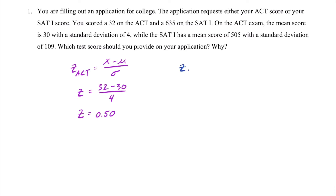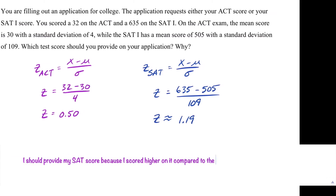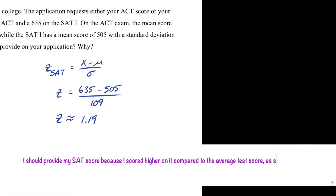Now, the z-score for the SAT uses the same formula: x minus mu, all over sigma. We scored a 635 on the SAT, the mean value of the SAT was 505, and the standard deviation of the SAT was 109, which means we end up with a z-score of approximately 1.19. Therefore, I should provide my SAT score, because I scored higher on it compared to the average test score, as shown by the higher z-score.